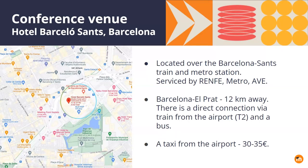Depending on where you're planning to stay during the days of the conference, the metro line L9 South can also connect you with the two airport terminals and the city of Barcelona every seven minutes, which may come in handy for some. The Sants station has great public transport connections with other parts of the city, so that will be really helpful if you're planning to explore the city during the days of the conference.